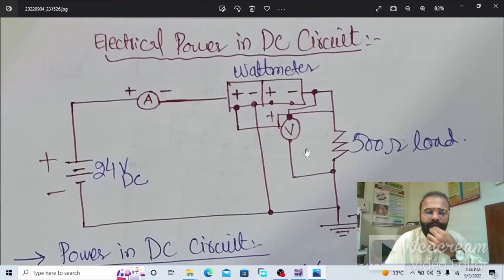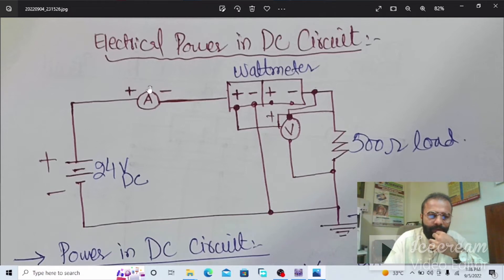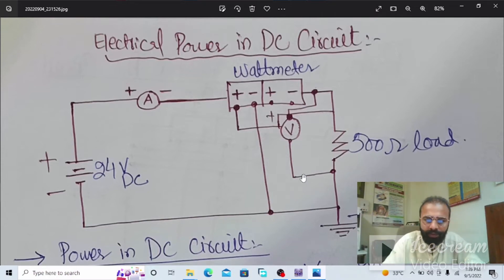Dear viewers, this is our first circuit, which is the simple DC circuit. We need to connect the wattmeter with this circuit to measure the electrical power. This is the wattmeter, which shows the amount of current flowing in this circuit. This is the voltmeter connected in parallel across the resistor, and this is the 24 volts DC supply. Now we need to simulate this circuit in Multisim software.